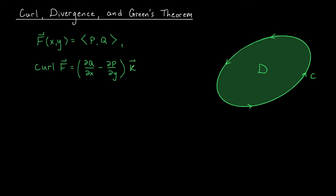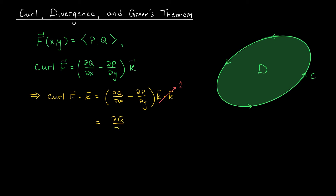Recall that from the last video, if we have a vector field f of x, y with component functions p and q, then its curl turns out to be (partial q by partial x minus partial p by partial y) times the k vector. This is exactly the expression that appears in the double integral from Green's theorem, so perhaps we can rewrite Green's theorem in terms of the curl. To get rid of the k vector, all we have to do is take the dot product of both sides with k. Since k dot k equals 1, we get that curl f dot k equals partial q by partial x minus partial p by partial y.